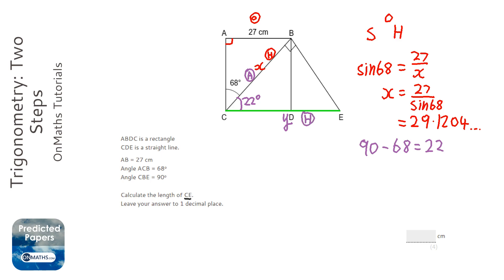So this time I'm going to be using cos, so it's CAH. So cos 22 equals my 29.1204 over y.